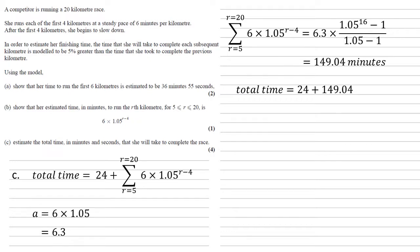So our total time is this added to the 24, so 173.04 minutes. But again, we need to change this into minutes and seconds, so we take our 0.04 times it by 60, which gives us three seconds. So the answer is 173 minutes and three seconds.